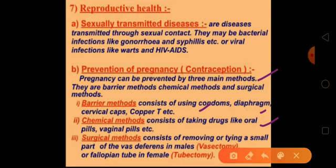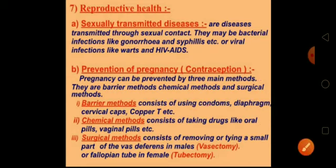The third method is surgical, and it is the most used method. It consists of removing or tying a small part of the vas deferens in males, which is responsible for carrying sperm from the testes. This is known as vasectomy. The removal or tying of the fallopian tubes in females is known as tubectomy. This is the prevention of pregnancy when someone does not need any more children.